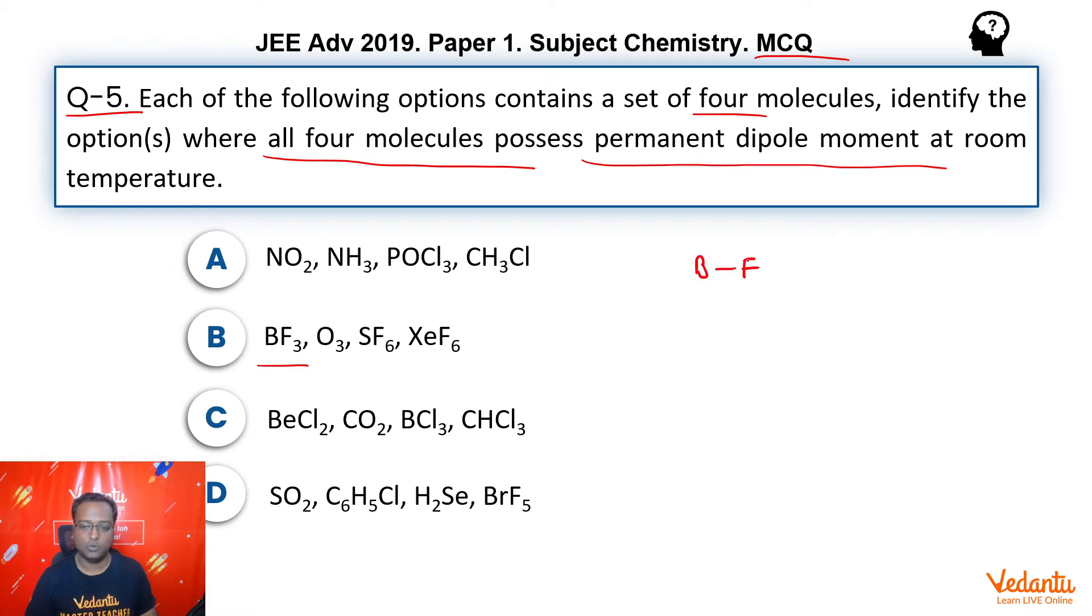So, BF3 if you remember, BF3 has boron at the center, we have three fluorines, SP2 hybridized and all of these dipole moment vectors will be at 120 degree from each other and therefore they will get cancelled. So, mu net will be zero. Hence, option B is definitely out of the question.